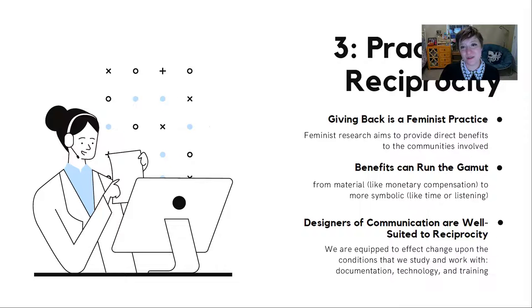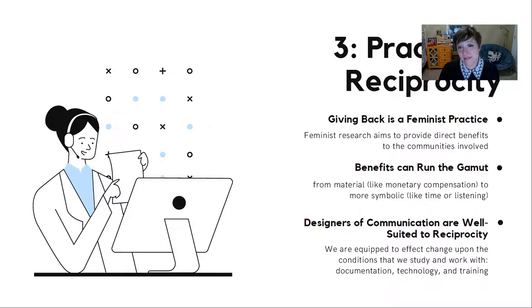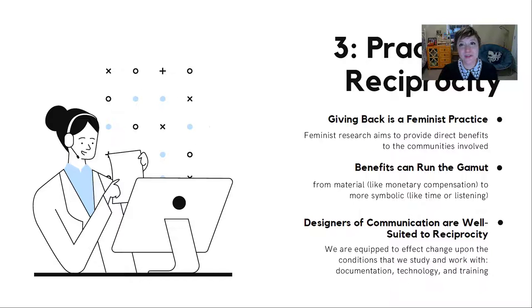The third feminist methodological tactic that I want to highlight is reciprocity. Reciprocity — or giving back to research participants — is a feminist practice. Feminist research aims to provide direct benefits to the communities it involves. These benefits can run the gamut from material things like money or gifts to more symbolic things like time or listening. We as designers of communication are really well suited to reciprocity because we're equipped to effect change on the conditions we study and work with, particularly documentation, the design of technology, and training or education.